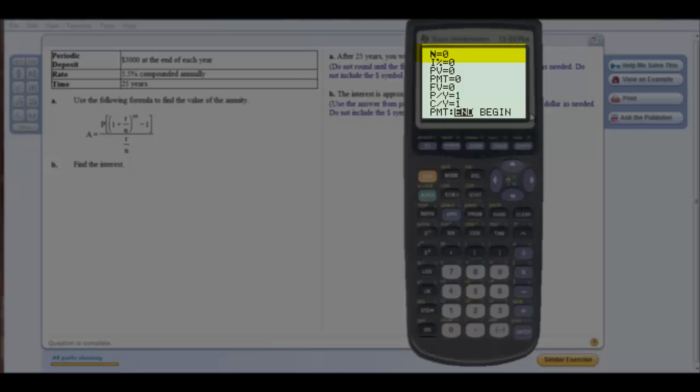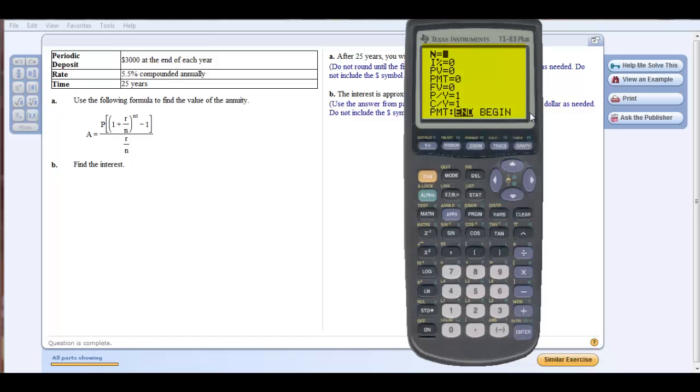N stands for the number of payments total over the course of the loan. I is your interest rate in terms of a percent. PV is present value, PMT is your monthly payment, FV stands for future value. P over Y is the number of times per year I'm going to be making a deposit, and C over Y is the number of periods per year that interest is compounded. Payment end and begin is whether I make the payment at the end of the period or the beginning of the period.